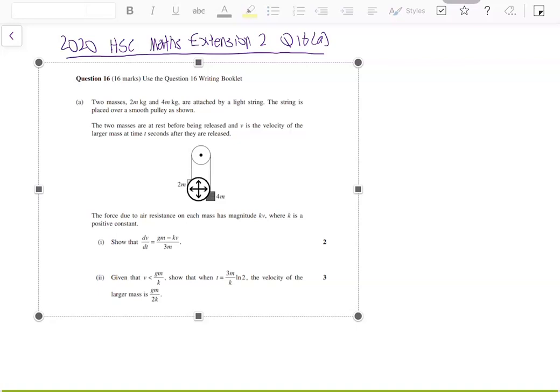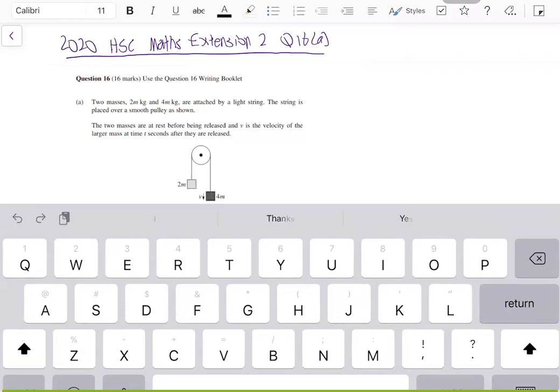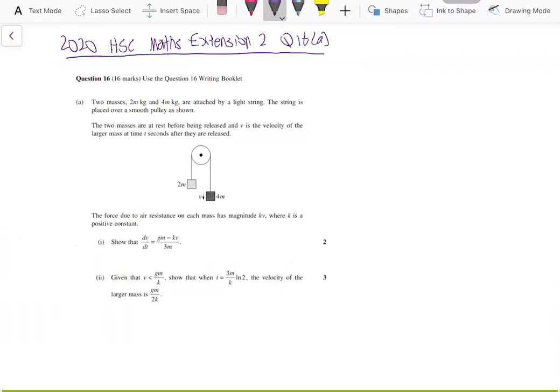Today I'll be solving question 16A from the 2020 HSC Maths Extension 2 exam. We've got two masses of 2m kg and 4m kg attached by a light string.